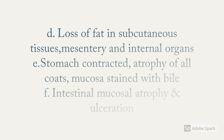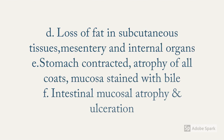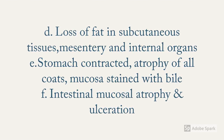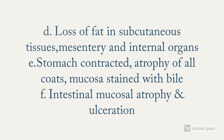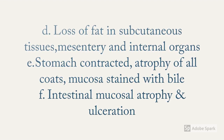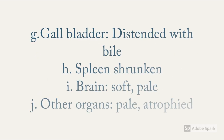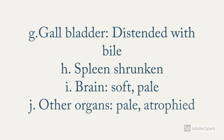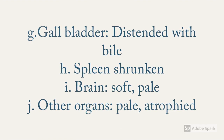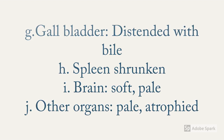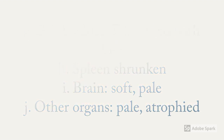There is loss of fat in subcutaneous tissues and internal organs. The stomach is contracted with atrophy of all coats and mucosa stained with bile. There is also intestinal mucosal atrophy and presence of ulceration. The gallbladder is distended with bile. The spleen is shrunken, the brain is soft and pale, and other organs are pale and atrophied.